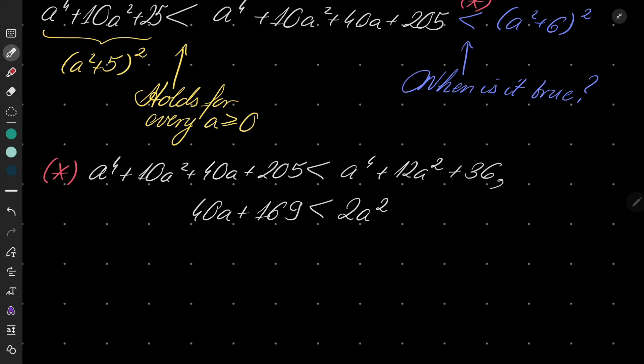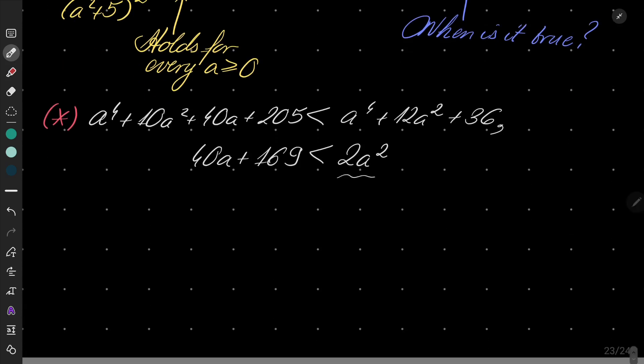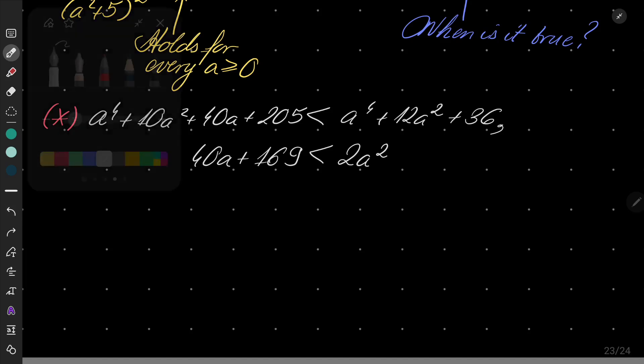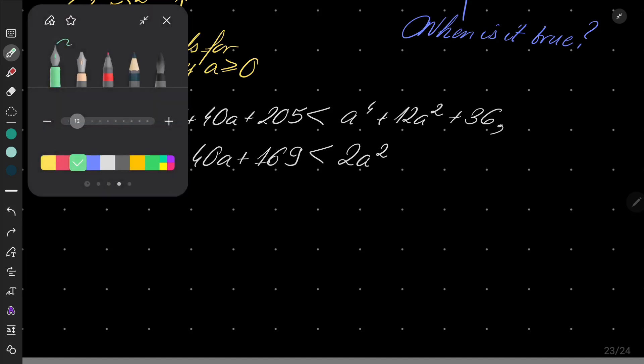I believe, if I am not mistaken, 169 plus 30 will be 199 plus 60. And look, here I have a quadratic function. Quadratic function values are usually much greater than values of a linear function.